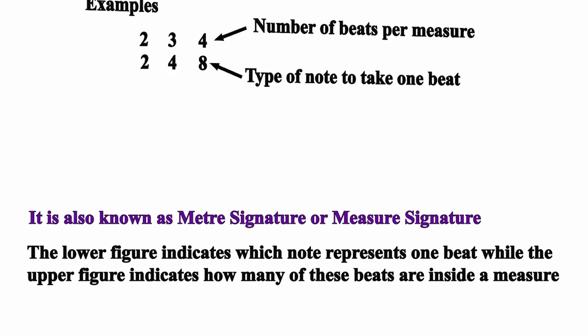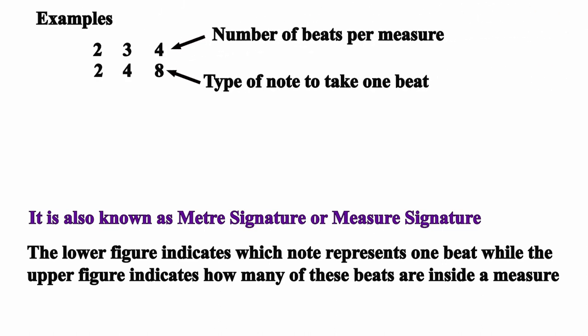Examples are: 2 2, 3 4, and 4 8. Note that because they are not fractions, we do not call them '2 over 2' or '3 over 4' or '4 over 8.' They are called as individual numbers — so 2 2 is called 'two two,' not 'two over two.' That's the correct way to call them.